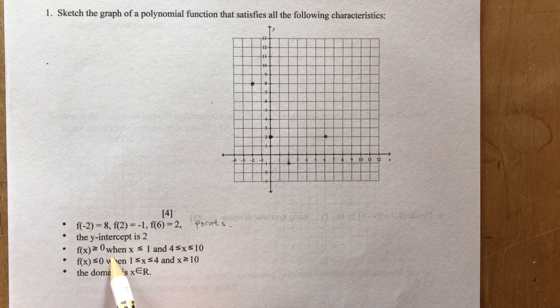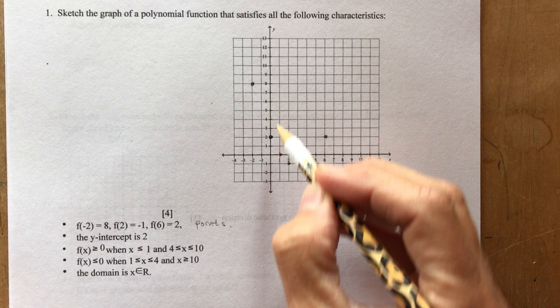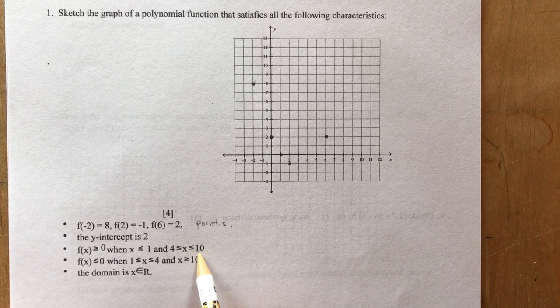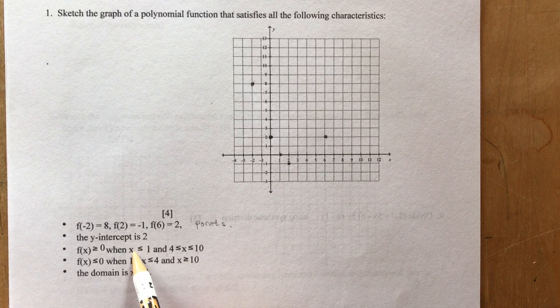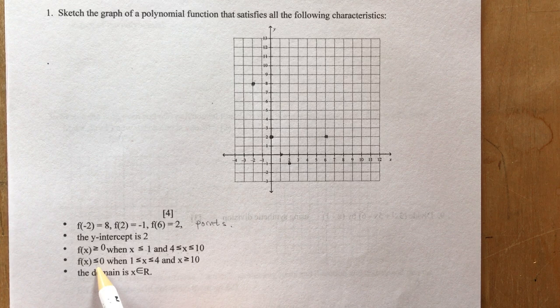f(x) is greater than or equal to 0 when x is less than or equal to 1. So that means it's going to cross here — it's going to be greater than or equal to 0 for x less than 1. Then it also gives you another area of positivity. It's going to be above or on the x-axis between these two numbers, and below the x-axis in another region.